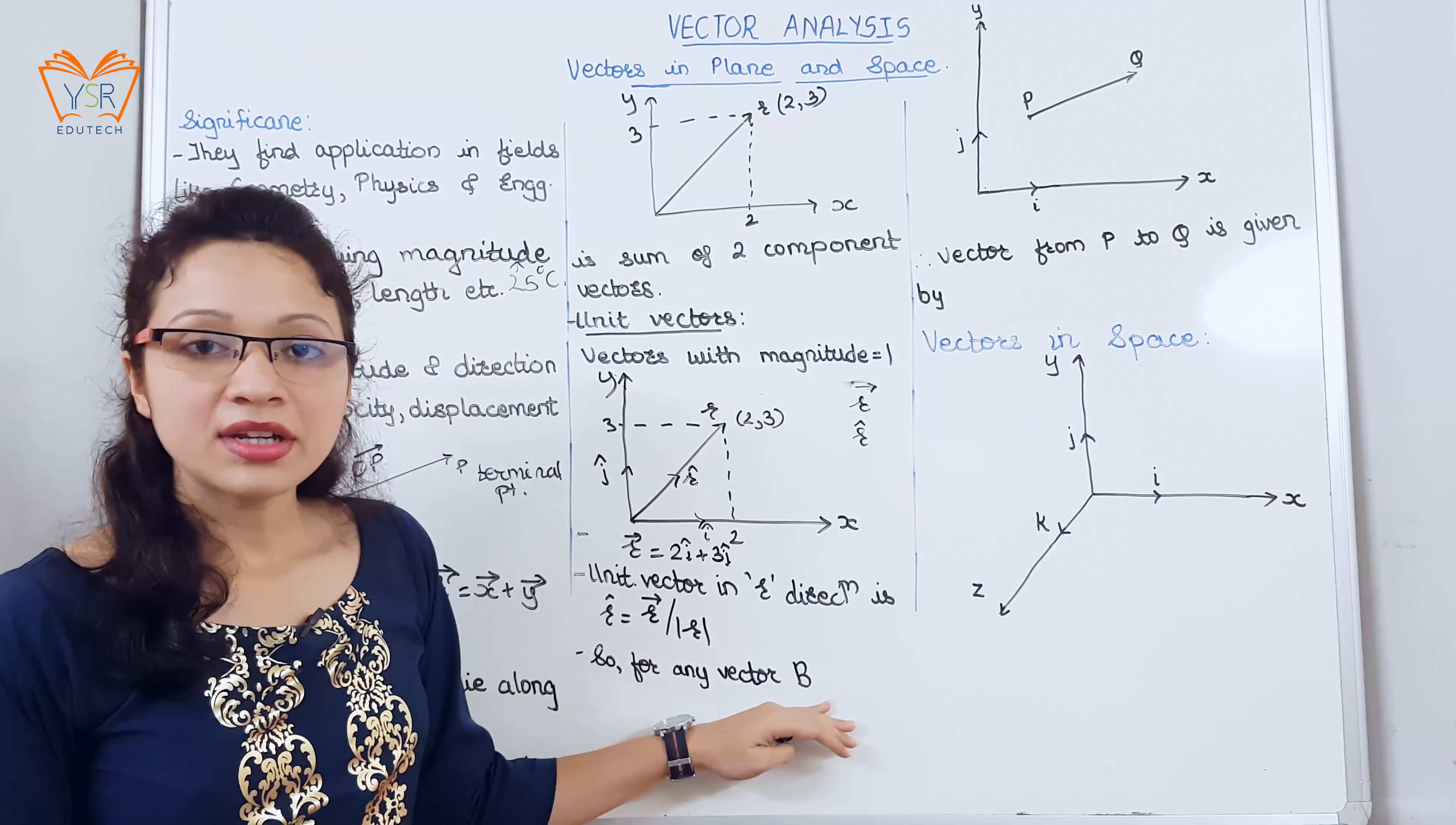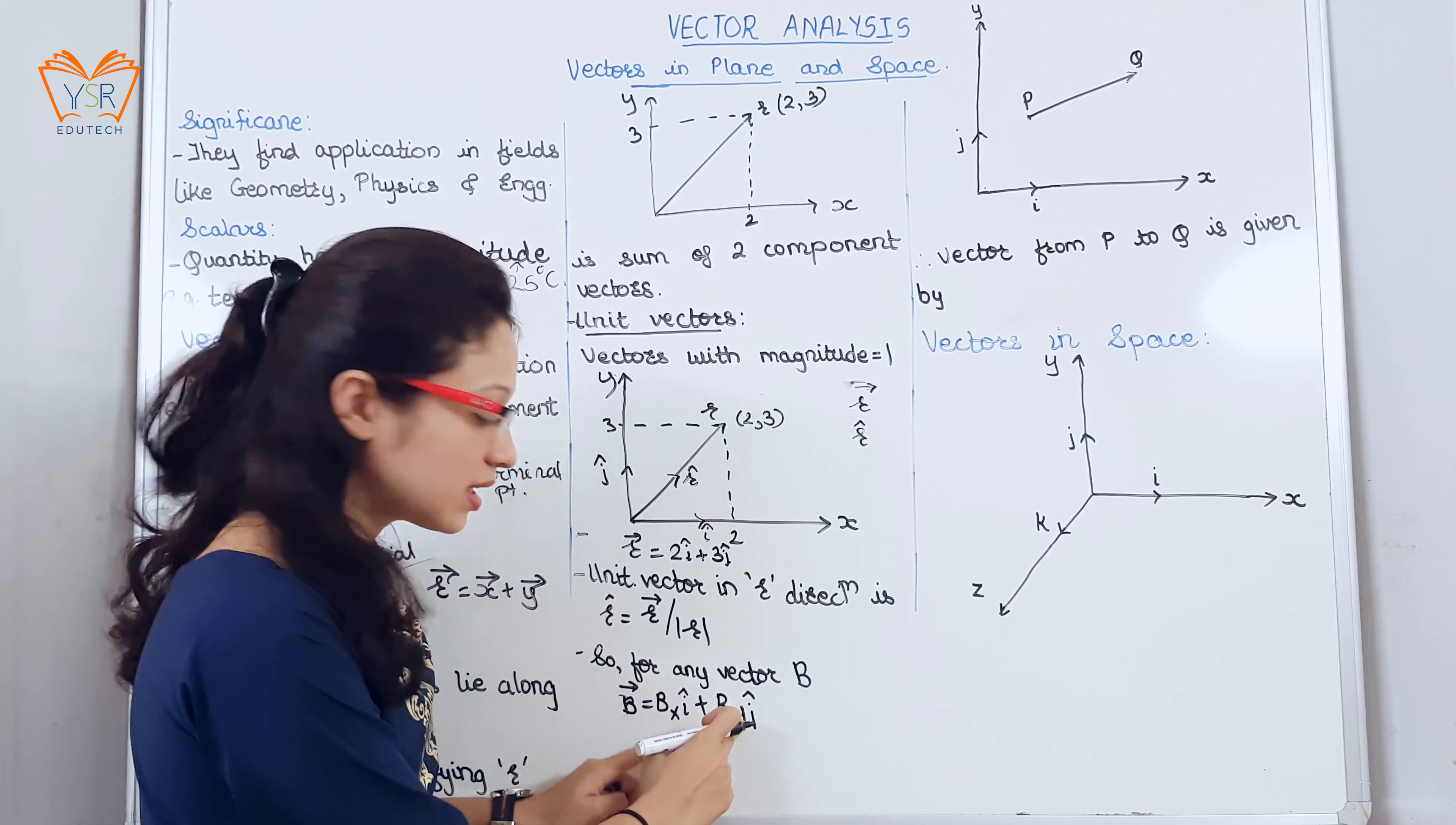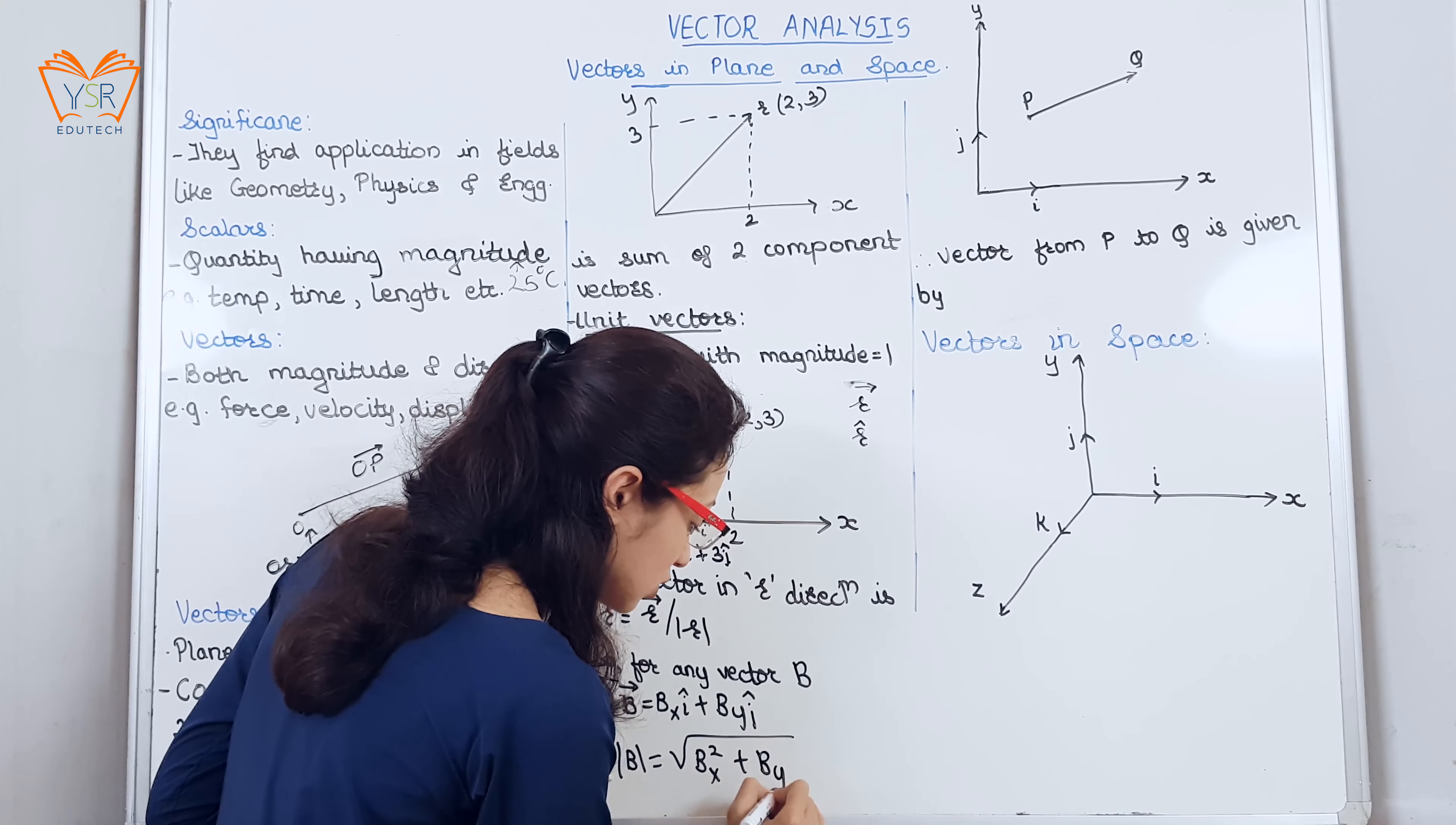So we will generalize it for any vector b. We can write bx i cap plus by j cap. bx, by are the magnitude, i cap and j cap are the unit vectors. Unit vectors basically give the direction, magnitude and directions, and the magnitude of b is given as under root bx square plus by square.